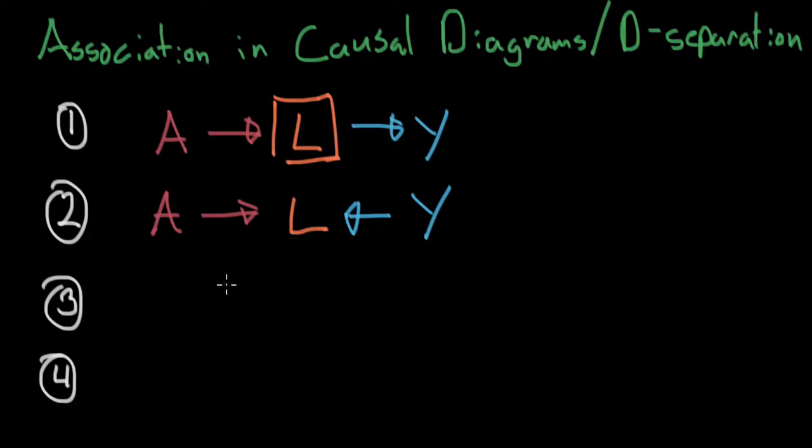Third rule. The third rule is actually one of the most complicated rules here. This third rule is, again, fairly simple. You've got an A. It affects an L. And then we have an L, which is affected by a Y. So it looks very similar to the above rule. The only difference is, in this case, let me condition upon this L. What do you think happens here? Is A associated with Y now? The interesting thing is that it is.